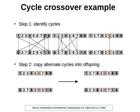Let's have a look at an example to make things clearer. We have two parents. We start off at the first element of parent1, where the value is 1. Now we find the corresponding element — we find element 1 in parent2. In parent2 we check the value, which is 9. We find the value 9 in parent1.